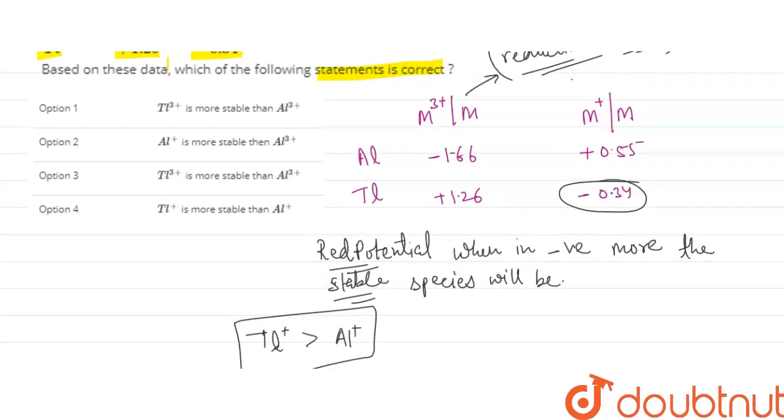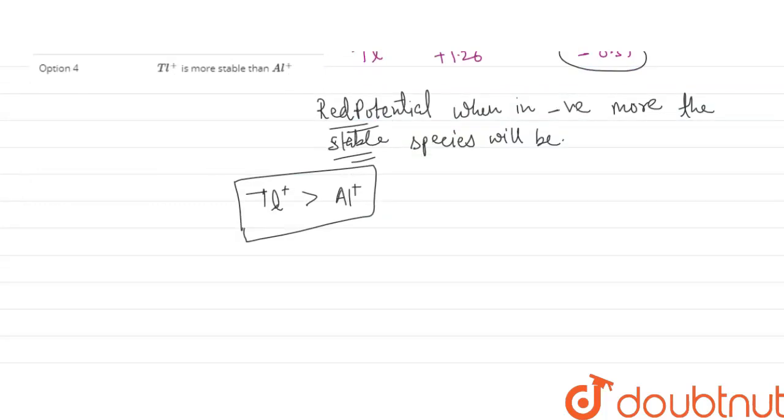Now similarly, M3+ to M: here the value for aluminum is in negative value, minus 1.66, so aluminum 3+ will be more stable than thallium 3+.